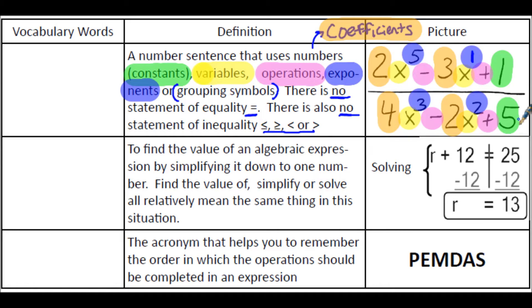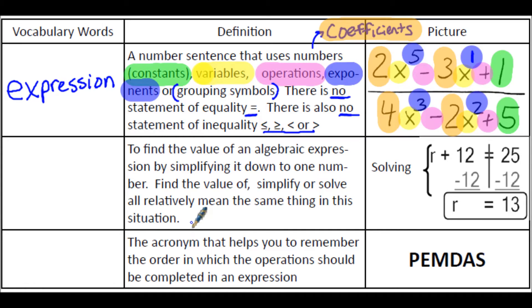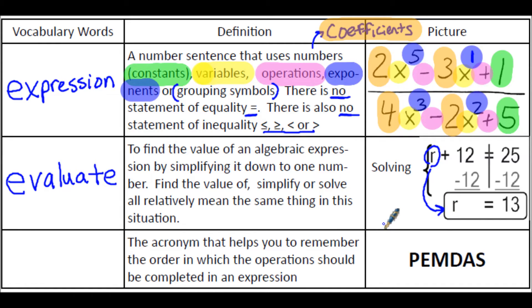But there are other grouping symbols that you'll see in later years. So these whole sentences are two examples of different expressions. To find the value of an algebraic expression by simplifying it down to one number — or find the value of, simplify, solve — they all relatively mean the same thing in this situation. To the right we have an example where you're solving an equation, and it could be used to solve an equation or to simplify an expression. And evaluate is used in many different contexts.